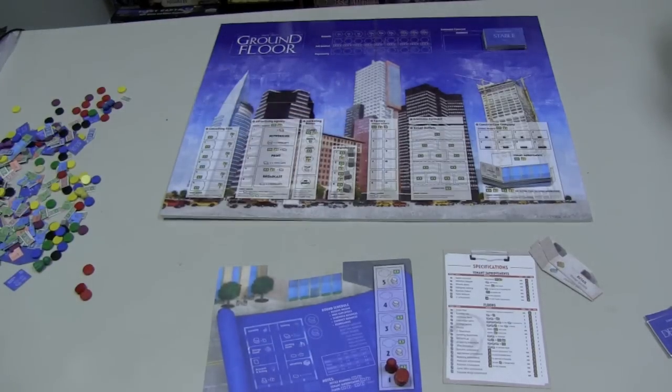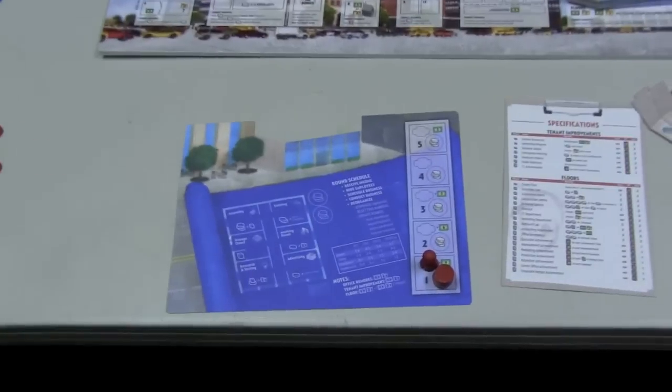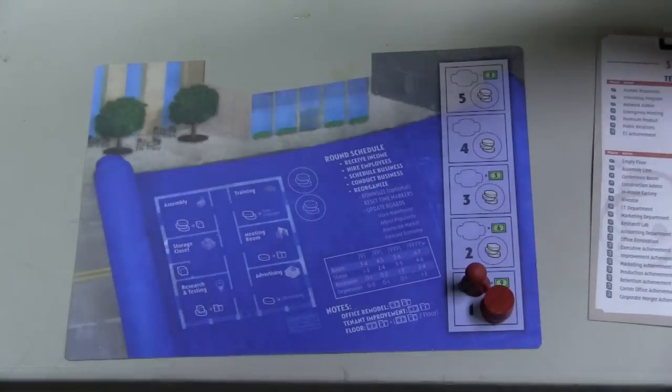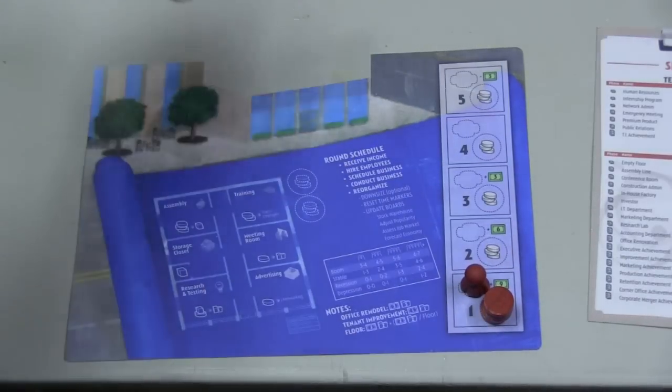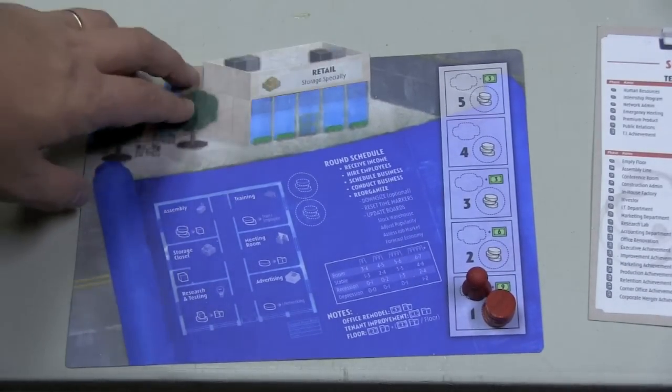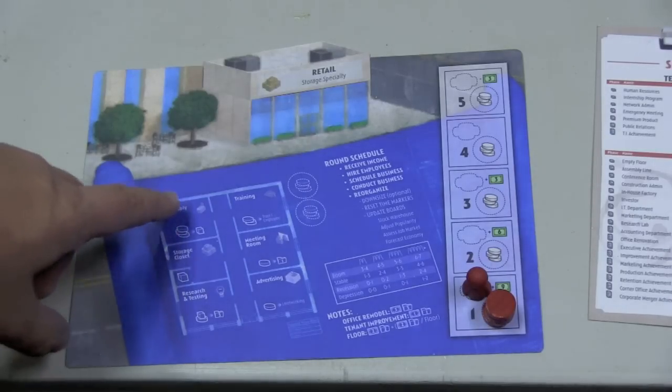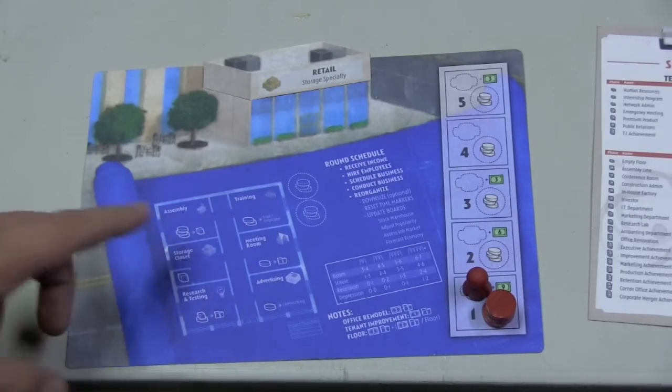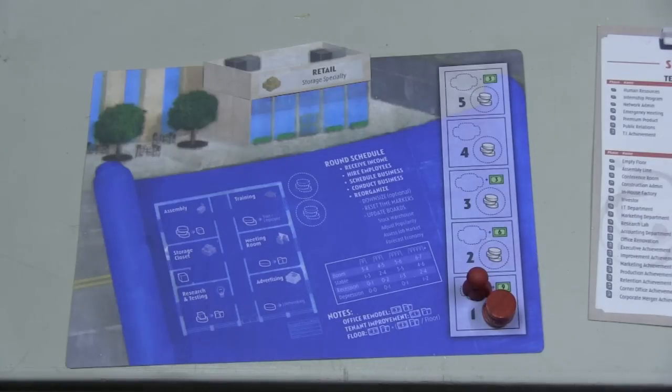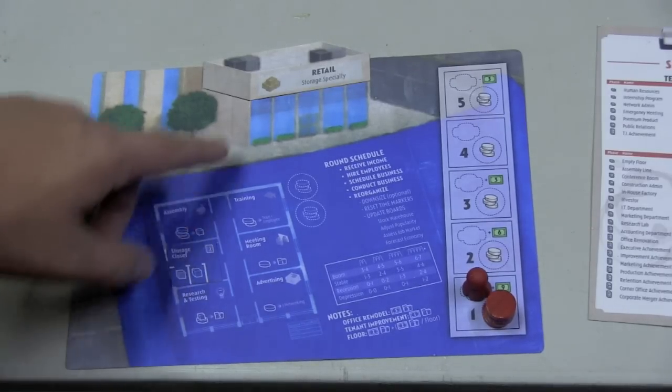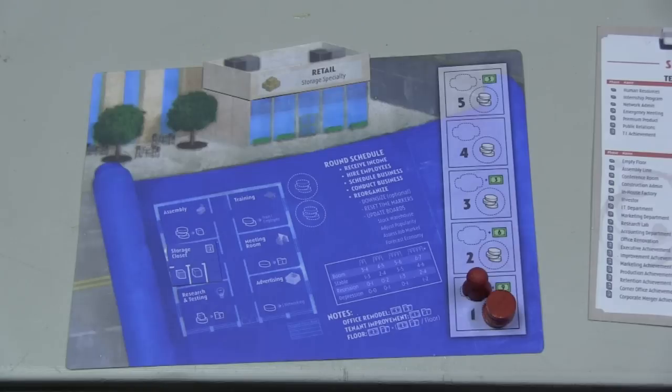Now, before we take a look at the big board, we want to take a look at your smaller board. This is your company. At the beginning of the game, you will take a ground floor and place it there. See how that slides right into there? So here, a retail with a storage specialty. And you have six rooms on your ground floor that you'll be using as the game progresses, and you can upgrade those as the game goes by, but you will get at least one of them to start out with. For example, I start with a storage closet here, because I have the storage specialty.